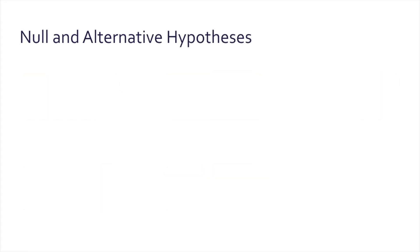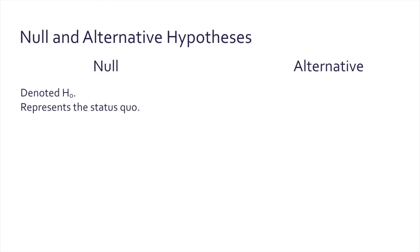Let's finally talk about the null and the alternative hypothesis. In any hypothesis test, you will see those two — the null and the alternative — and they are always the two competing possibilities. Science is about being very conservative with analysis, and because of that, the null hypothesis, denoted as H0, represents the status quo. The null hypothesis is always given more weight, because you really have to prove your point if you're trying to accept the alternative.